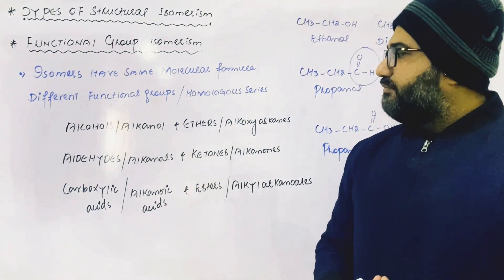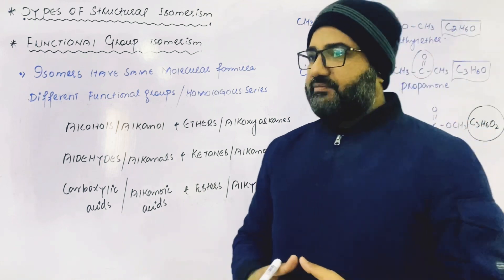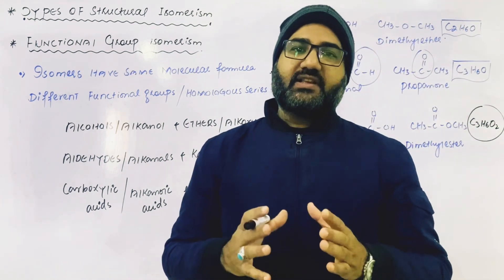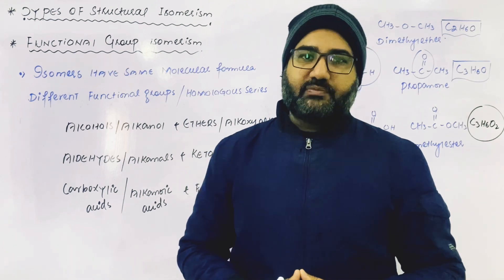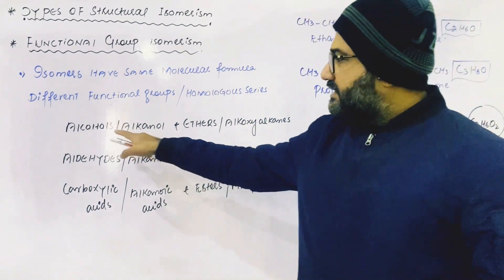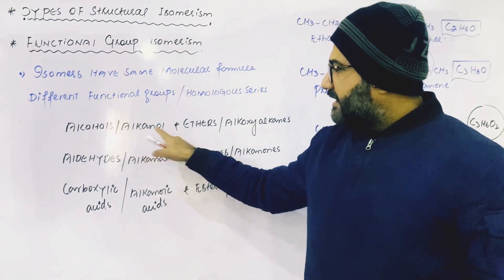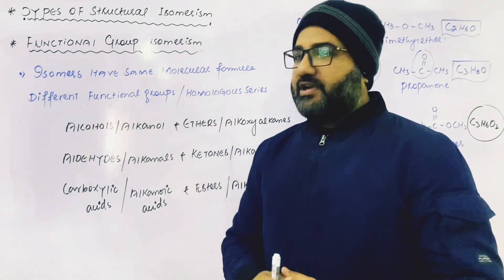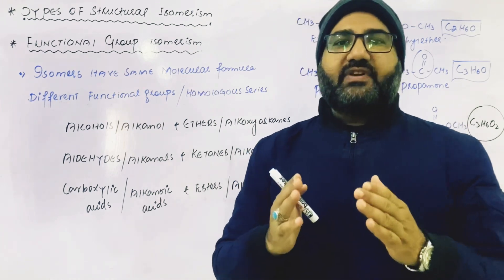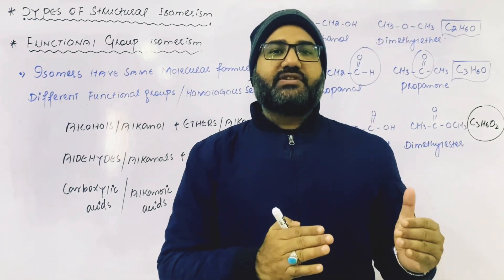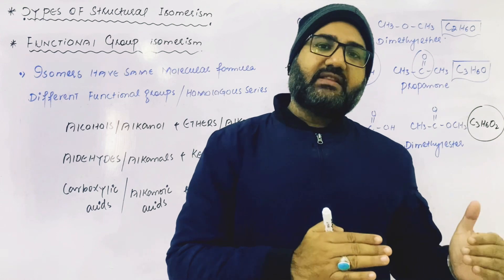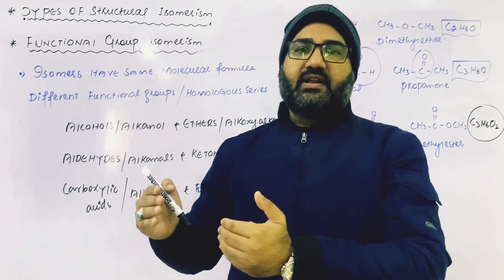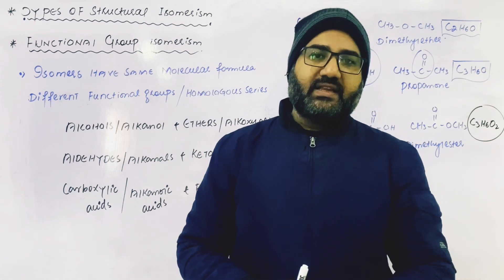There are three important classes of organic compounds which are functional group isomers of each other, with the condition that the molecular formula should be the same. Alcohols (alkanols) and ethers (alkoxyalkanes) are functional group isomers of each other, but every alcohol is not a functional group isomer of every ether — the condition is that the molecular formula of the alcohol and that of the ether must be the same.